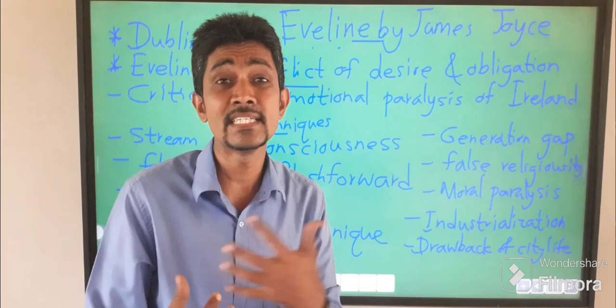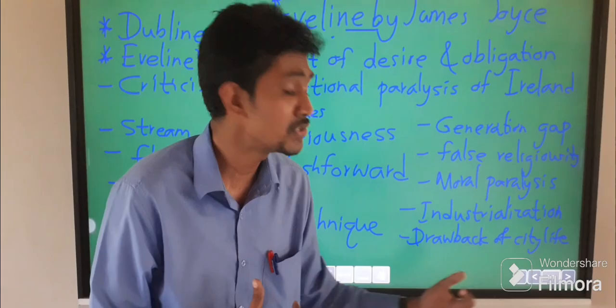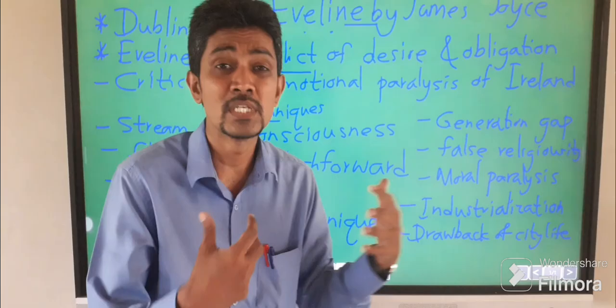The drawbacks of city life include alcoholism. Evelyn's father is a drunkard, so Evelyn is doubly victimized — from the work environment and from her father's harassment. Evelyn had to undergo so much harassment and had to sacrifice many things for her life. So Evelyn is the heroine of this short story when you read it closely.